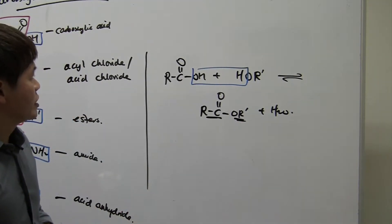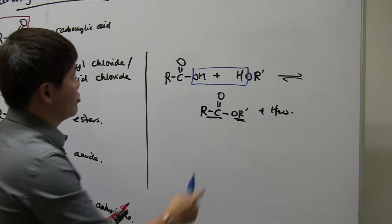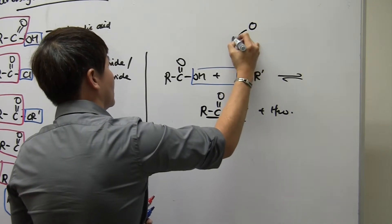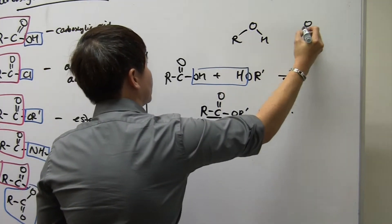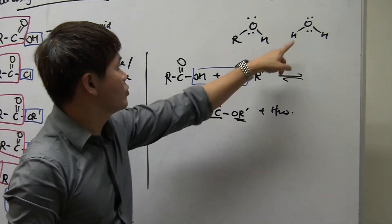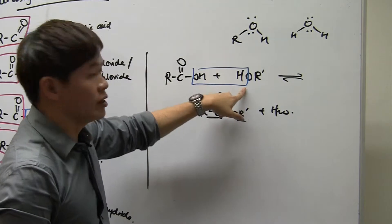Now if you take a look at this reaction and someone will ask you what kind of reaction do you think this is, you take a look at alcohol. Alcohol resembles a lot like water. If water is a bent structure, all we need to do is just replace one H with the R group. Basically it forms an alcohol.